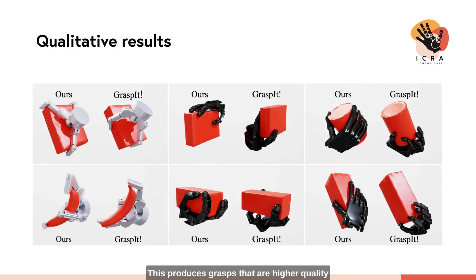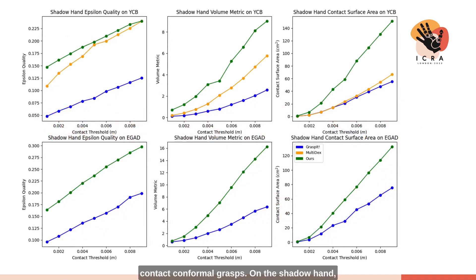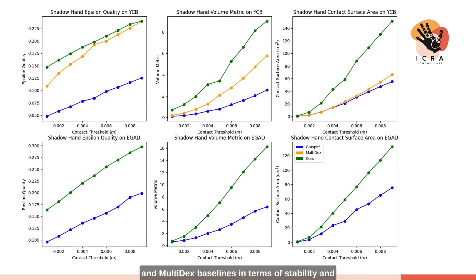This produces grasps that are higher quality than sampling-intensive baselines because gradient information allows us to efficiently search the full high-dimensional DOF space and find high-contact conformal grasps. On the Shadow Hand, for example, our method shown in green dominates Grasped and MultiDex baselines in terms of stability and contact metrics across a variety of contact thresholds.